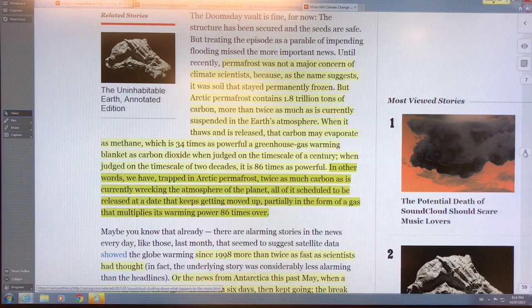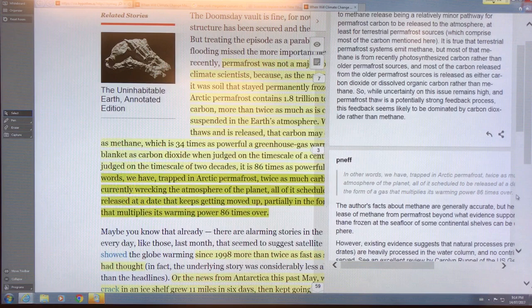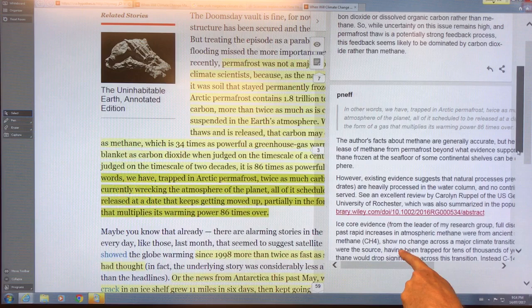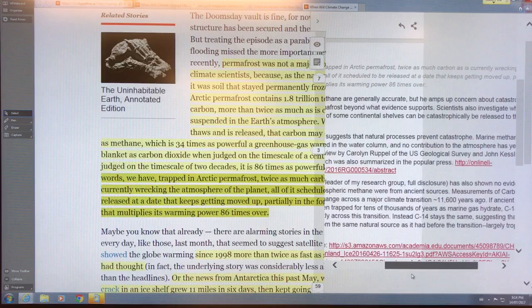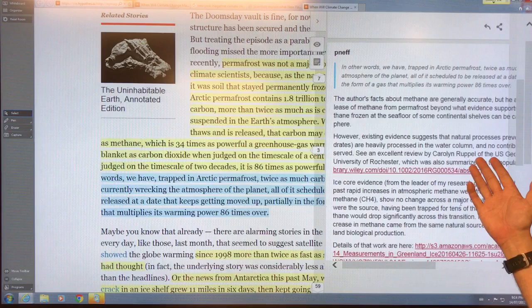The author's facts about methane are generally accurate, but he amps up concern about the stuff from the permafrost. It talks about one paper where if the methane comes out slow, a lot will be absorbed in the water column. Yes, but if there's big pulses and big bursts, that won't be the case.